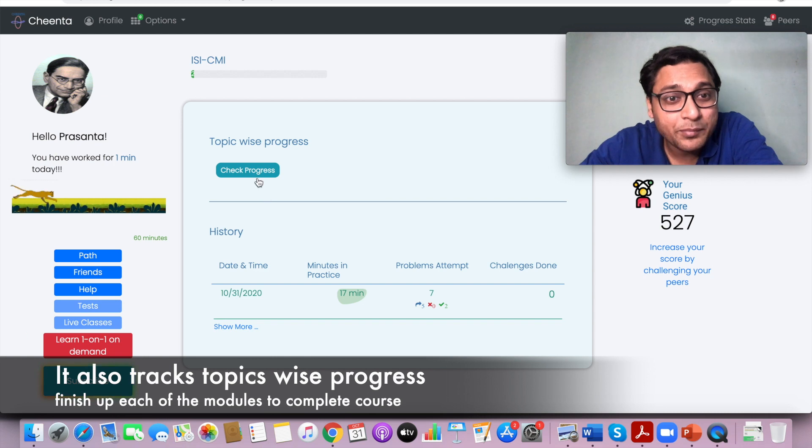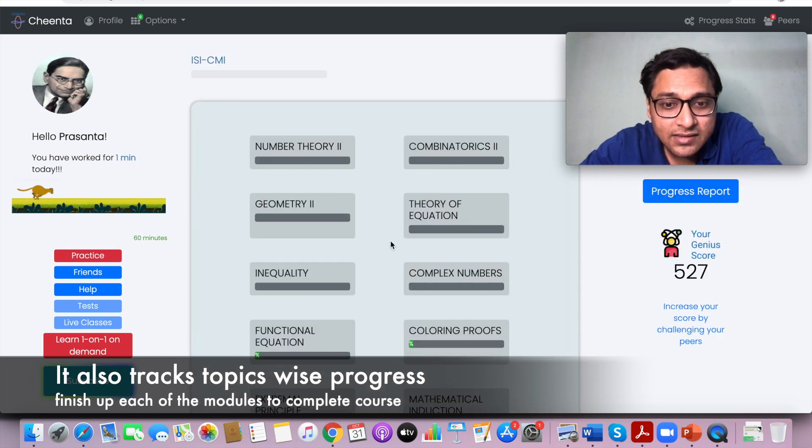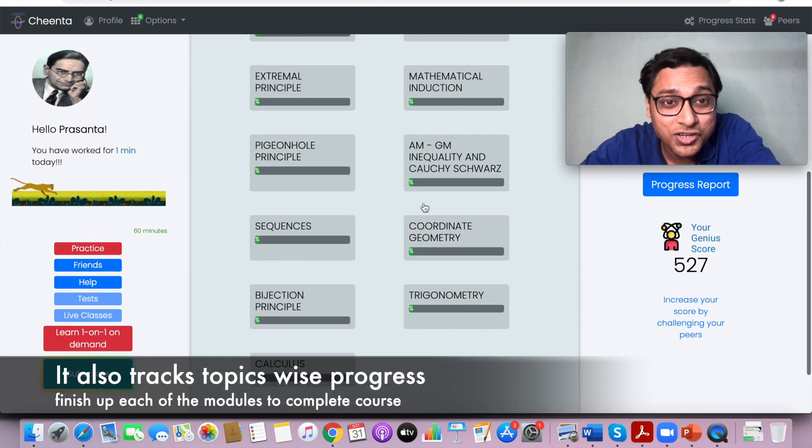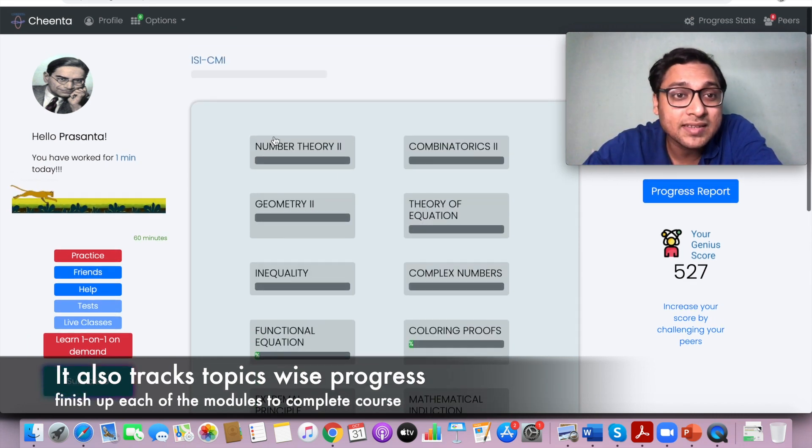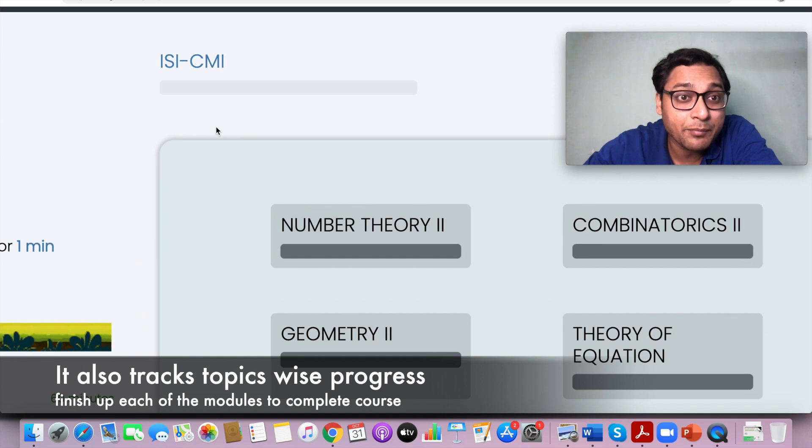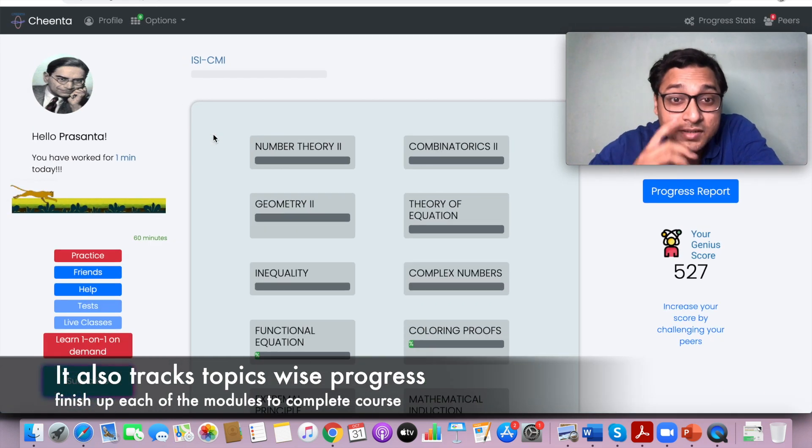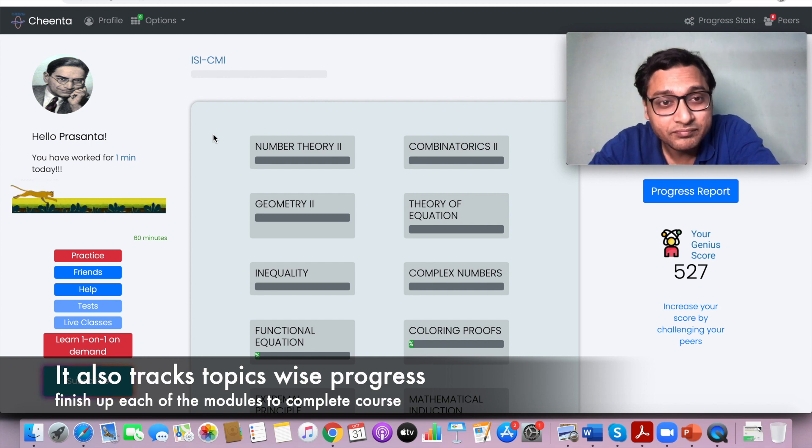I could also check progress topic-wise. So for example, I could go to this path and check that there are modules like Number Theory 2, Combinatorics 2, Geometry 2—these modules that together make up this ISI and CMI entrance exam program. So once you are done progressing through all of these modules, you will be done with this particular contest, that is, this ISI and CMI entrance program.